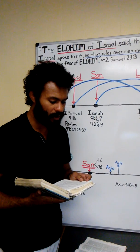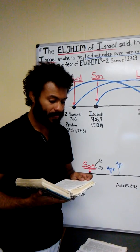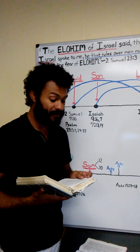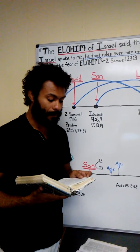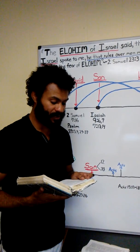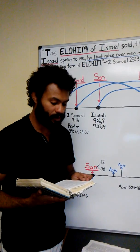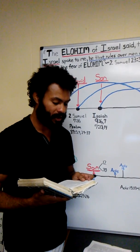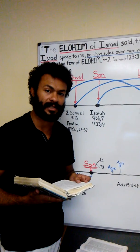And his name is called Wonderful, Counselor, the Strong El, the Father of Continuity, the Prince of Peace. Of the increase of his rule and the peace, there is no end. Upon the throne of David and over his reign to establish it, to sustain it with right ruling and with righteousness from now on, even forever. The zeal of Yahuwah of Hosts does this.